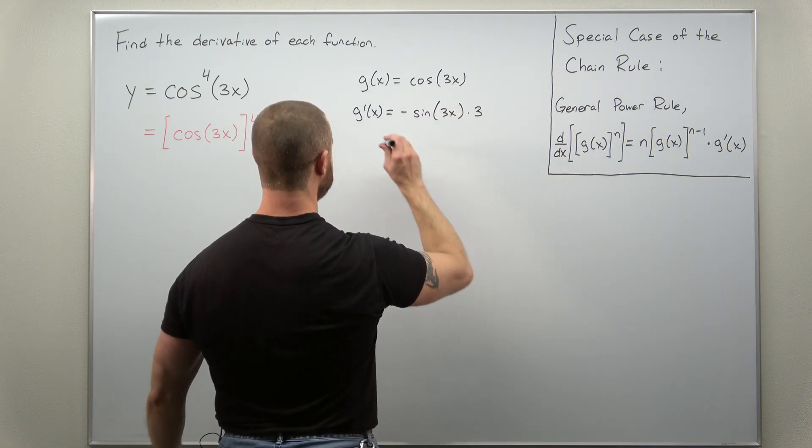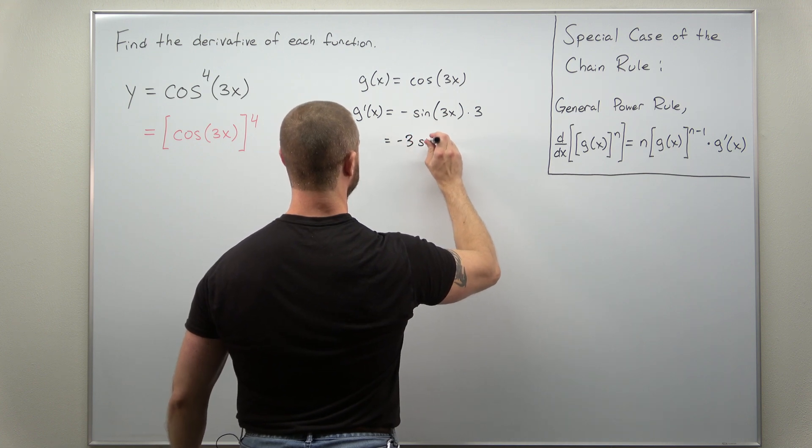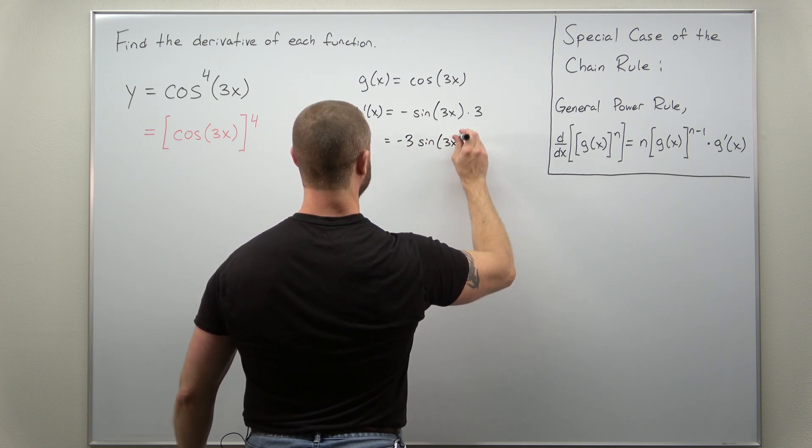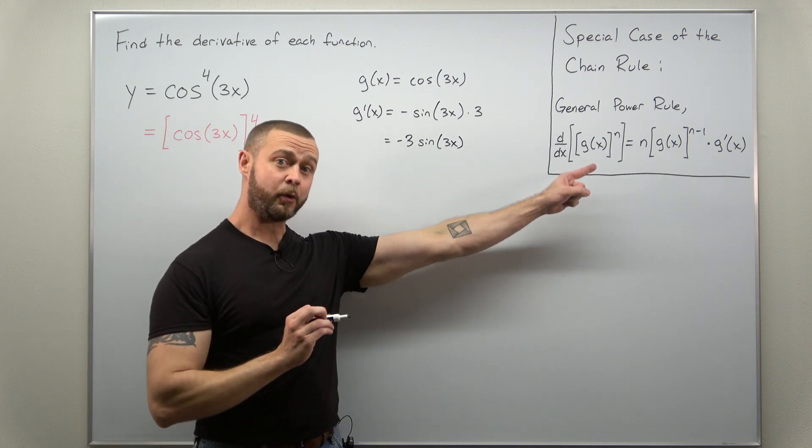And there we go. If you want, you can clean this up a little bit to plug in there. We can rewrite this as negative 3 times sine of 3x. And we're set to implement now the general power rule.